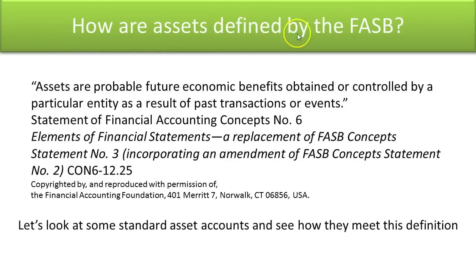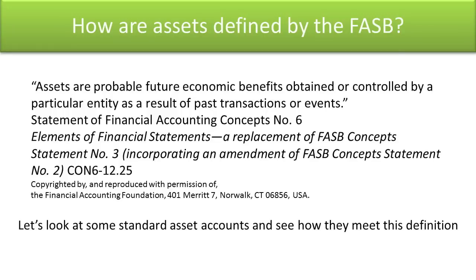How are assets defined by the FASB? Assets are probable future economic benefits obtained or controlled by a particular entity as a result of past transactions or events. This statement comes from the Statement of Financial Accounting Concepts Number 6, Elements of Financial Statements. In this statement, the FASB attempted to define the key pieces of what makes up the financial statements, such as assets, liabilities, equity, revenues, and expenses.